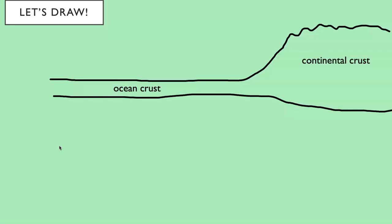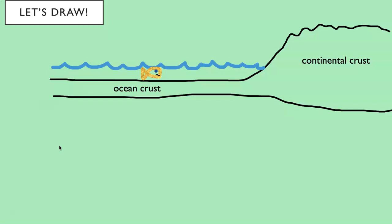You might want to get out some colored pencils or pens because we're going to draw quite a few things. Start with a line representing a cross-section, and a second line below it. We'll label ocean crust and continental crust. This is a side view through the Earth — and here's some ocean water with a little fish or maybe a big whale.